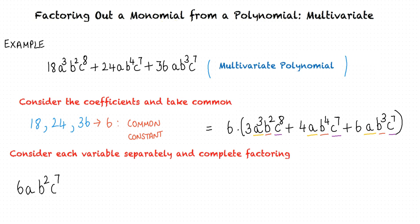Yes, that is right. Now we complete factoring the multivariate polynomial. Thus, we have 6ab squared c to the power 7 times the quantity 3a squared c plus 4b squared plus 6b.